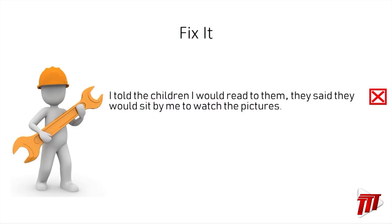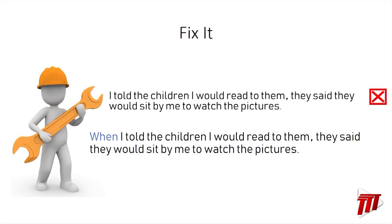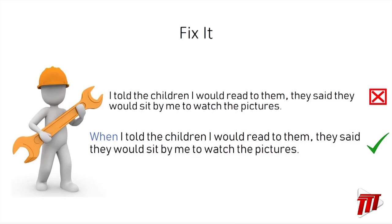So we're going to fix this comma splice by using a subordinating conjunction: "I told the children I would read to them, they said they would sit by me to watch the pictures." The comma is not strong enough there. The fix: "When I told the children I would read to them, they said they would sit by me to watch the pictures." This is a more sophisticated way of fixing a run-on sentence, but it makes the sentence flow very nicely.